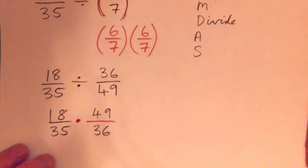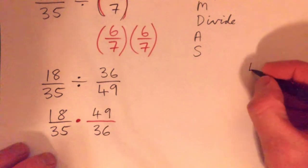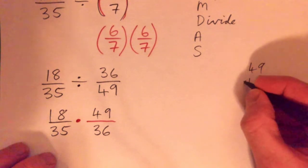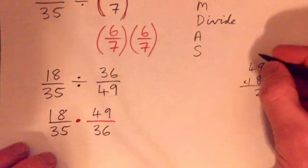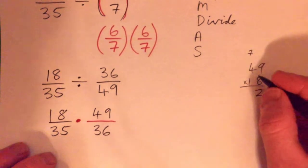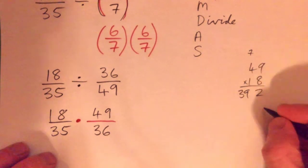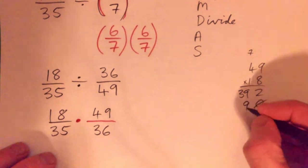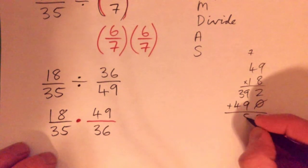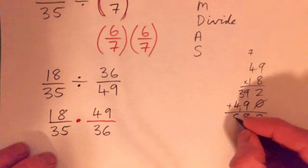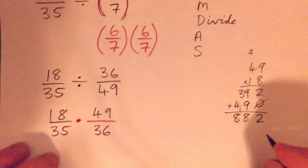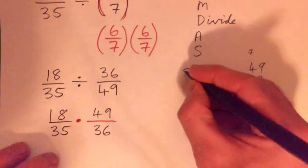And now can we, what can we, should we multiply 18 by 49 right away? Should we do that to carry seven, or is there a better way? So got 882 over, is there a better way?